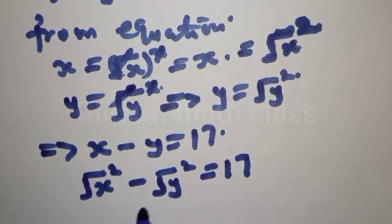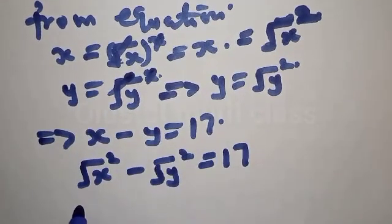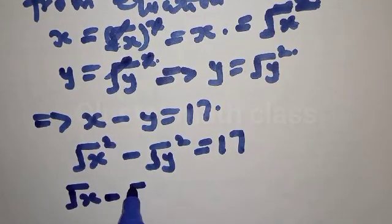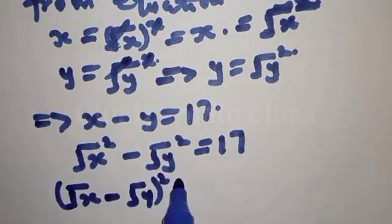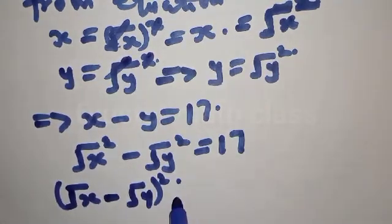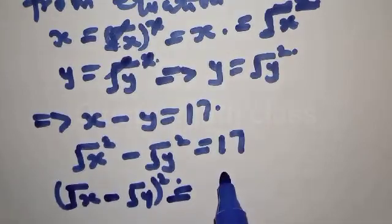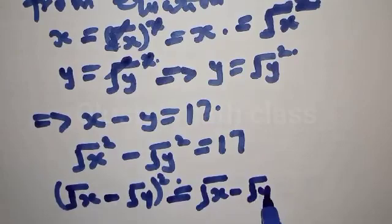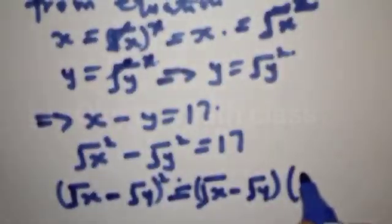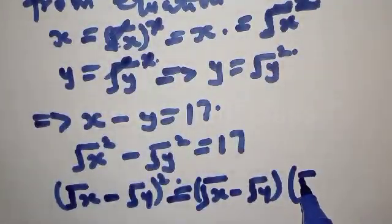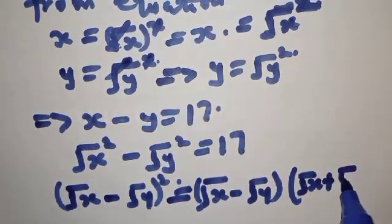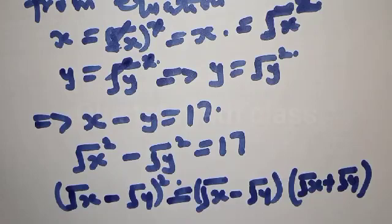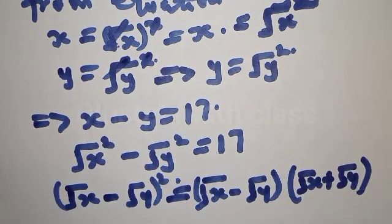You can see this is a difference of two squares, which can be factored as: (square root of x minus square root of y) times (square root of x plus square root of y) equals 17. This is the difference of two squares identity.